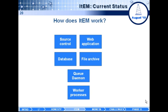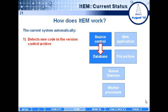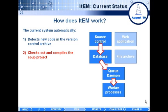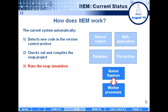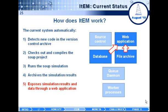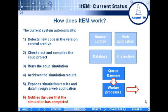ITEM consists of six components. In its current incarnation, it detects when new code is checked into the version control archive, checks out and compiles that code — in this case for the soup project — runs the soup simulation, archives the simulation results, exposes simulation results and data through web applications, and notifies the user that the simulation has been completed.